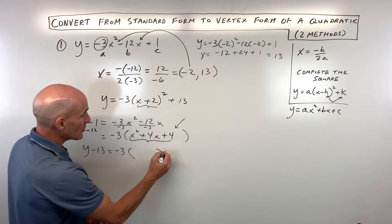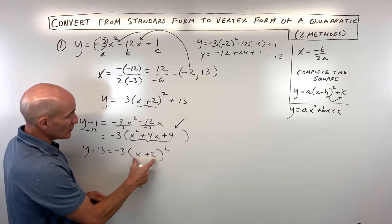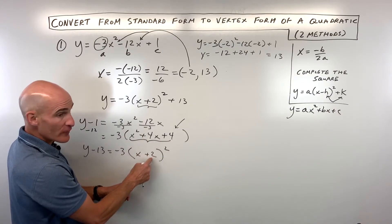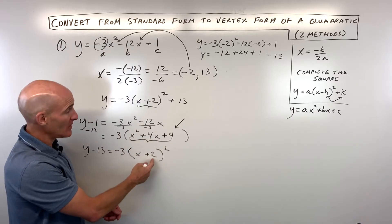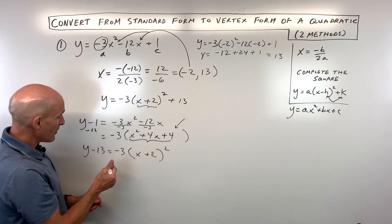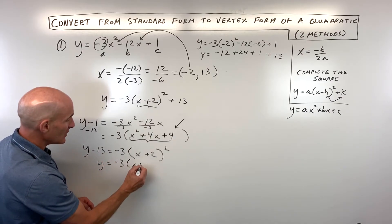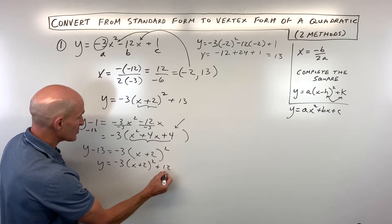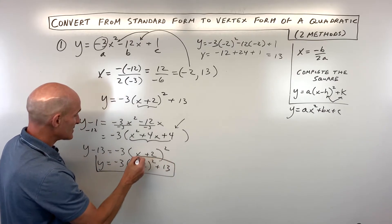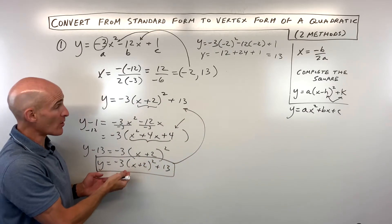This is a perfect square — factor it as x plus 2, the quantity squared. When completing the square, the number in the factored form is always half of the middle coefficient. So if it was minus 4x, this would be minus 2; if it was 20x, it'd be plus 10. The last step is to add 13 to both sides to get y by itself: y equals negative 3 times x plus 2 squared plus 13 — the exact same result as before.